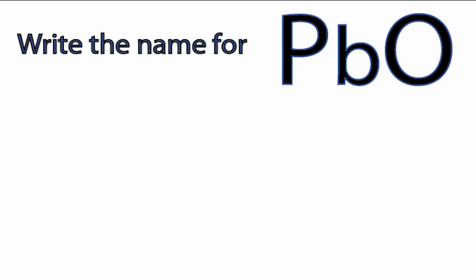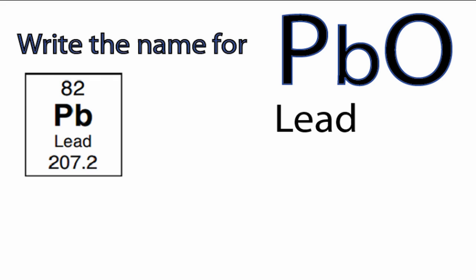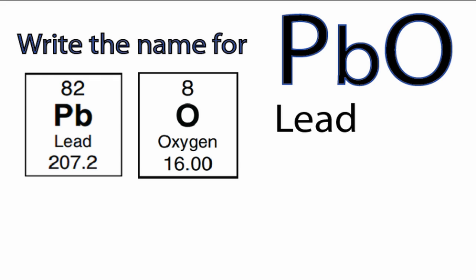So for ionic compounds, first we'll write the name of the metal, Pb, as we find it on the periodic table. And for O, we have oxygen.